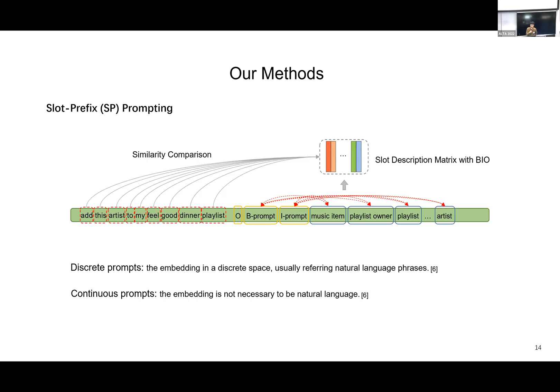In this research work, we propose a new schema called slot prefix prompting to do the zero-shot slot filling task. We concatenate all slot values with the user input and add special learnable discrete prompts to indicate whether tokens are Other, Beginning of a slot value, or Inside a slot value. We also do similarity comparison leveraging intrinsic knowledge from the pre-trained language model. This is a single-stage method with no overlap prediction problem.